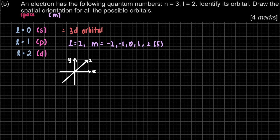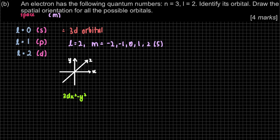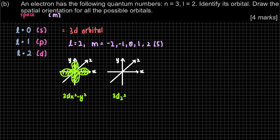First, I'll draw the axes: x-axis, y-axis, and z-axis. For the D orbital there are 5 possibilities. I'll start with 3Dx²-y² and 3Dz², because these orbitals are directly on the axes. For 3Dx²-y², the orbital is directly on the y-axis and x-axis. For 3Dz², the orbital is directly on the z-axis, and this one has a donut-like ring around it. That's two down.